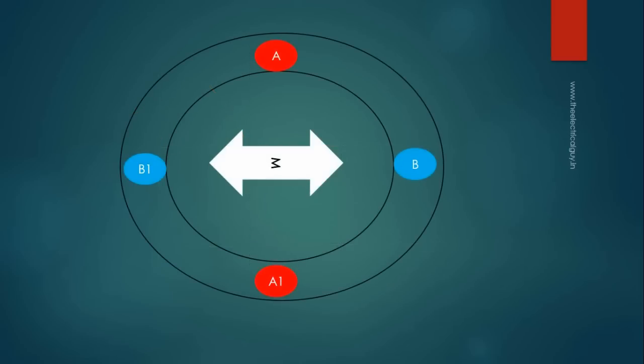Now let me connect identical resistors across both the windings. Current IR1 and IR2 will start flowing through resistors. These currents are in phase with their respective voltage and hence they are also out of phase with each other by 90 degrees.